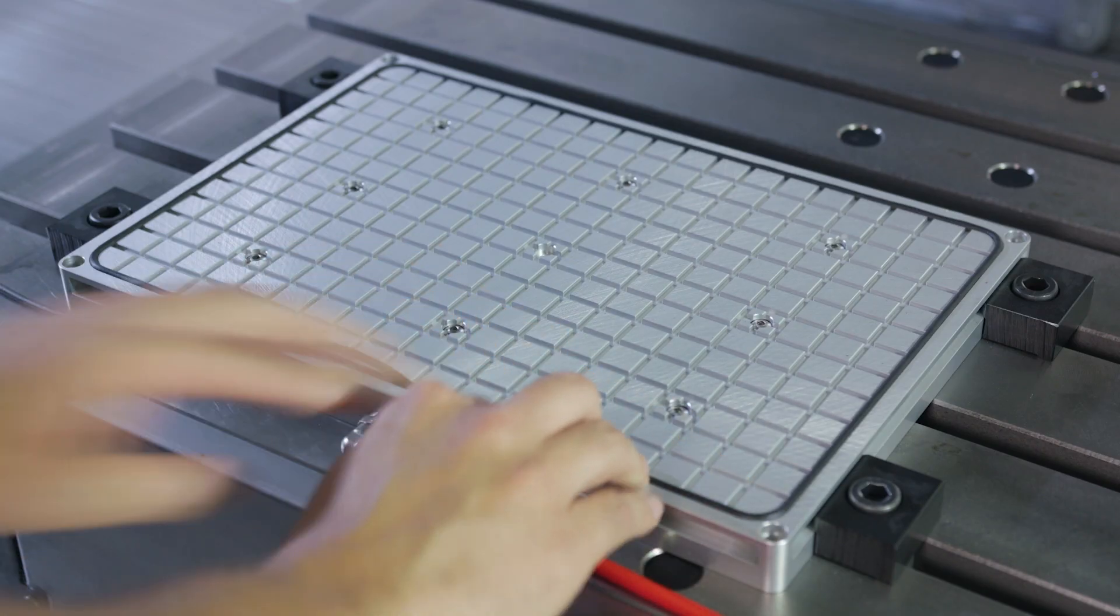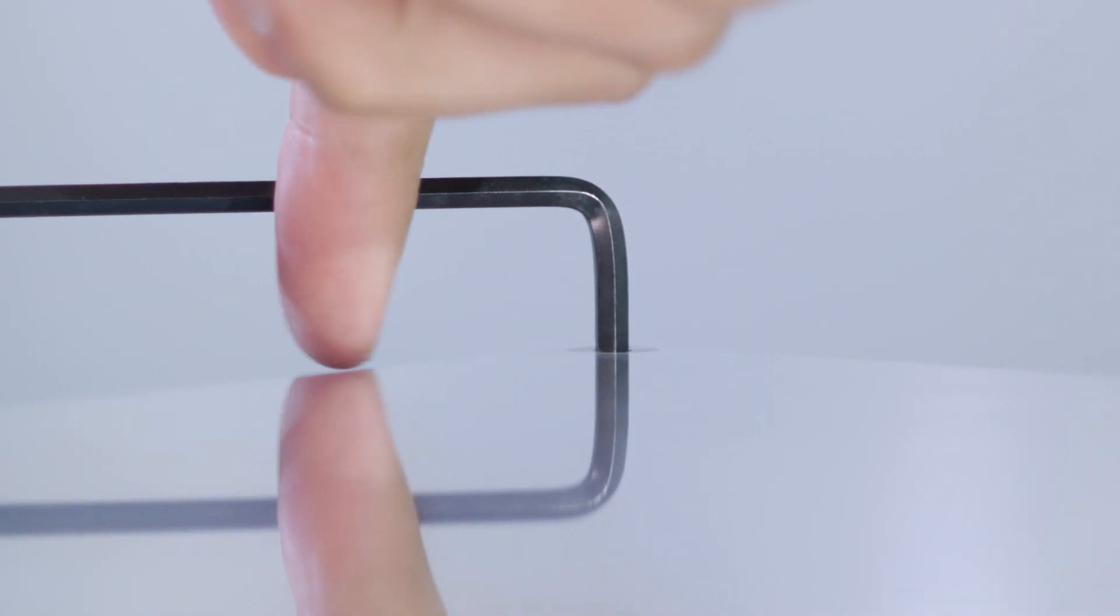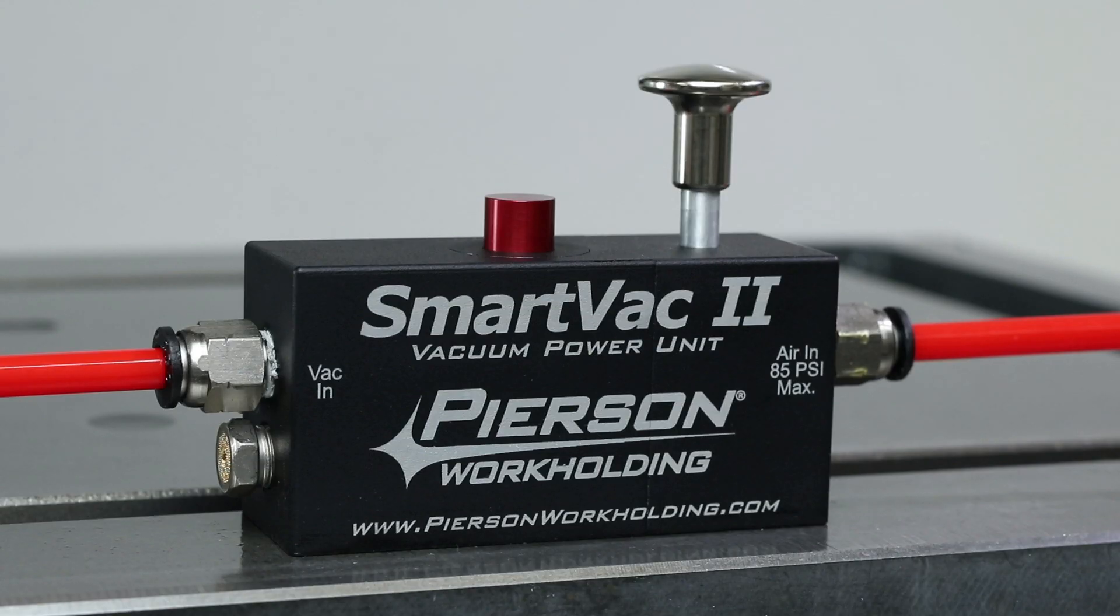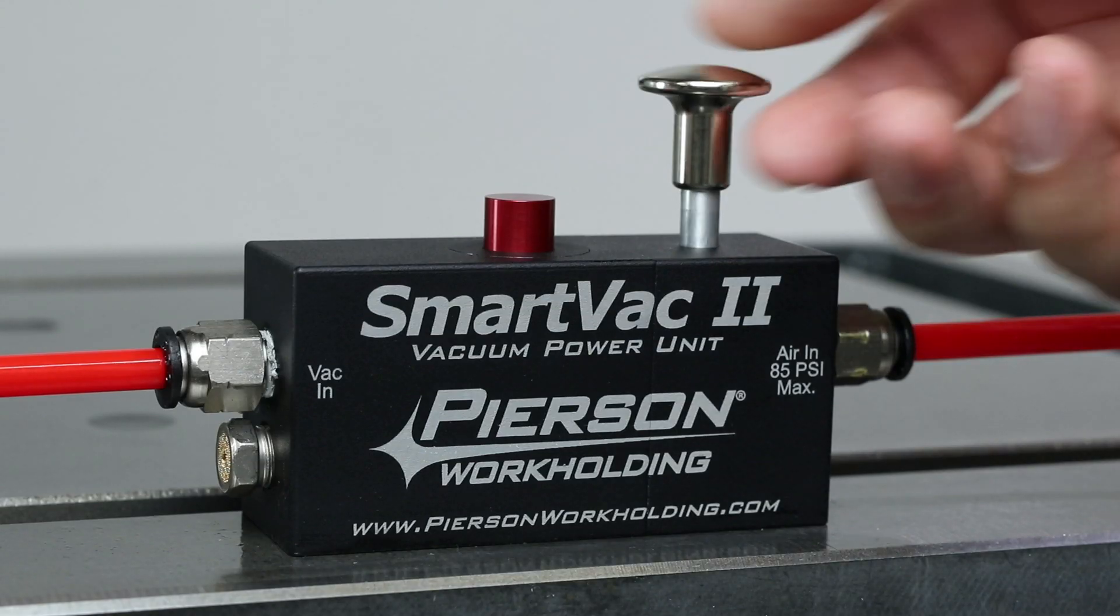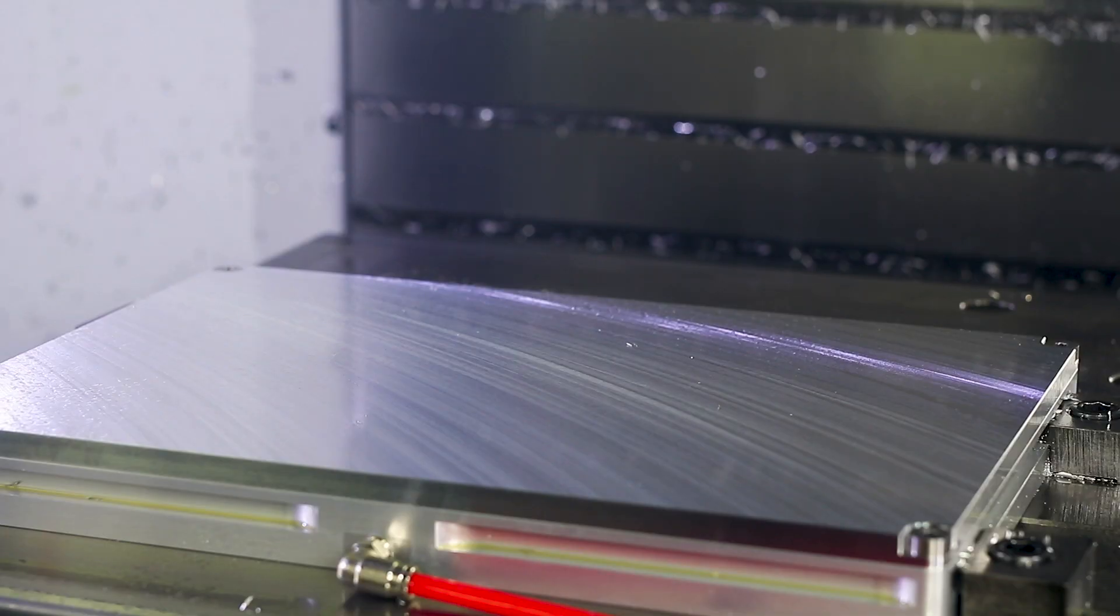The first thing to do is add gasket material to the outer groove in the chuck. Now, let's bolt down the top plate. At this point, let's turn on the vacuum power unit to double check our connections. We should see the vacuum indicator button go fully flush. At this point, we're ready to customize it.